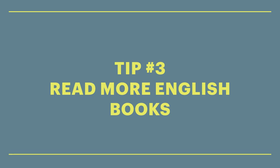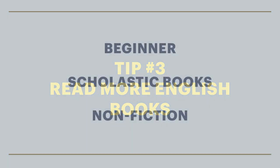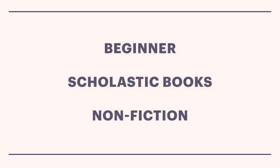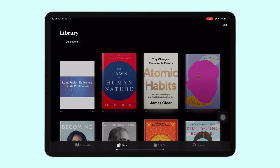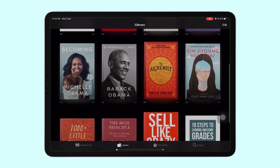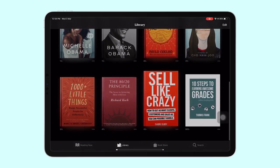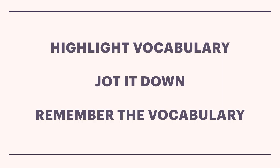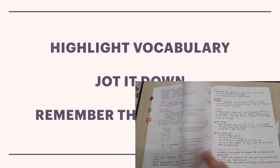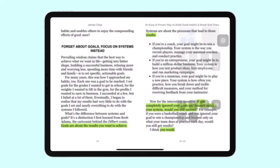The next tip is to read more English books, whether fiction or nonfiction. If you are a beginner, I recommend reading Scholastic books as they are easier to read and understand. If you are not a fiction lover, you can read self-enriching books such as Atomic Habits, The Laws of Human Nature, The Bullet Journal Method, and so on to improve your English.